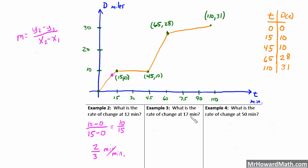Example three: what is the rate of change at 17 minutes? At t = 17 we're on the horizontal segment — the restaurant stop. The slope of a horizontal line is 0, since Y is not changing: (10 − 10) / (45 − 15) = 0/30 = 0. So the rate of change is 0 miles per minute. That makes perfect sense — he's sitting there eating breakfast and not moving at all.